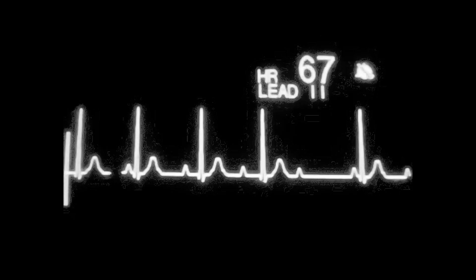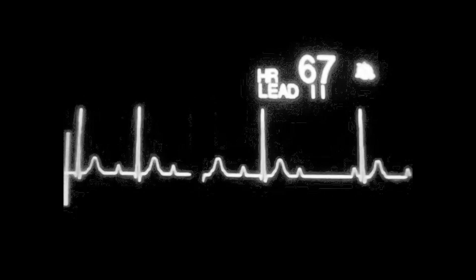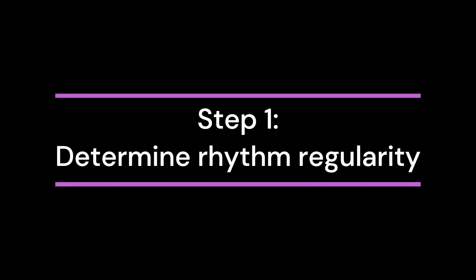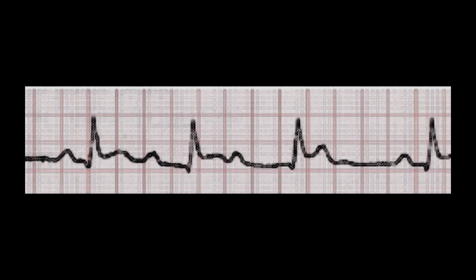To better understand this, let's take a look at a sample EKG reading by performing the steps of EKG analysis. Step 1: Determine the regularity of the rhythm. The atrial rhythm will be regular since there's nothing wrong with the atrial conduction system. The ventricular rhythm, however, will be irregular as seen in this EKG strip, with the R-to-R intervals having inconsistent lengths.